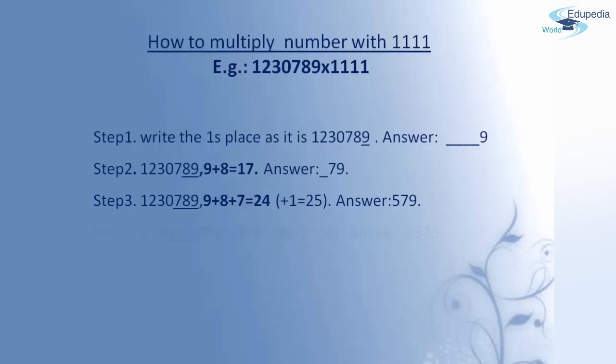Moving to step number 4, I have to add the digits in ones place, tens place, hundreds place and thousands place. Adding 9, 8, 7 and 0 gives 24. Adding the carry of 2 gives 26. Since 26 is a two-digit number, 6 is written in the answer and 2 is taken as carry. In the answer, I now have the digits 6, 5, 7 and 9.